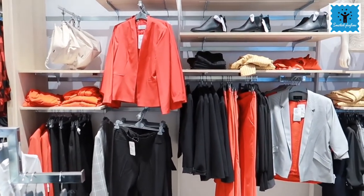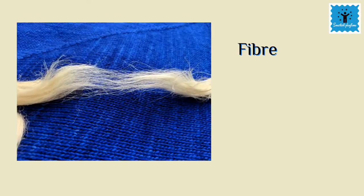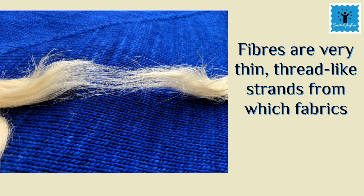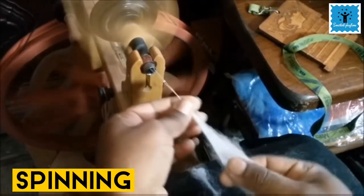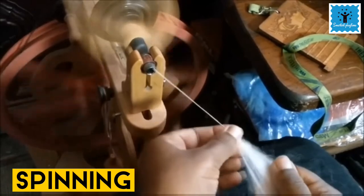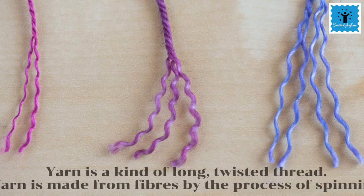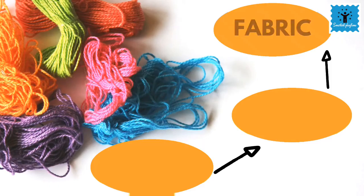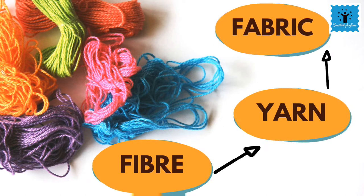As we know, clothes or fabric is made up of fiber. Fibers are thin thread-like strands. From these fibers, yarn is made by the process called spinning. Yarn is a kind of long and twisted thread. This yarn is used to make fabric on a loom.